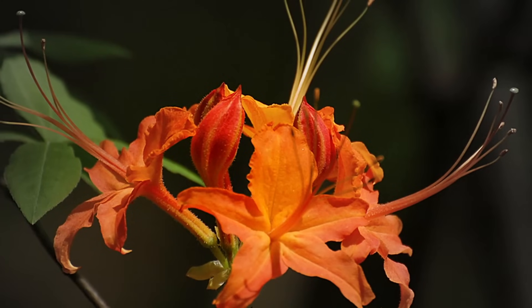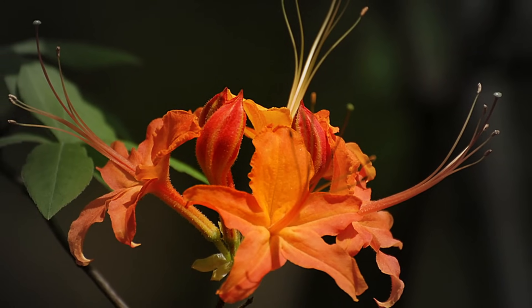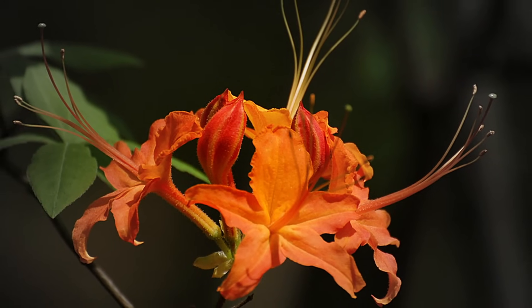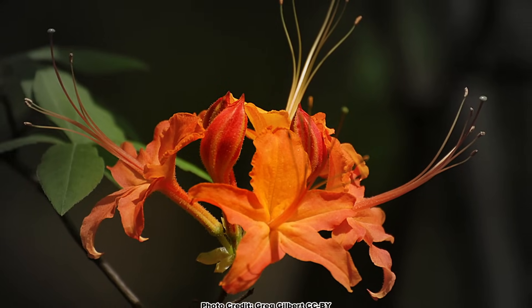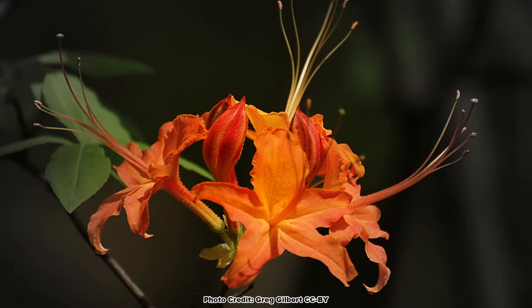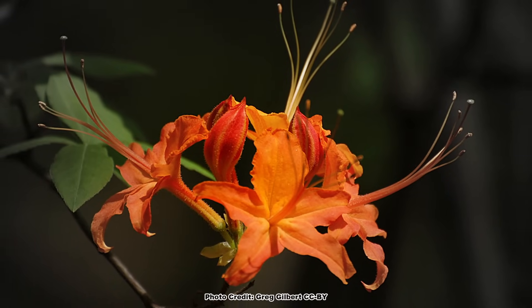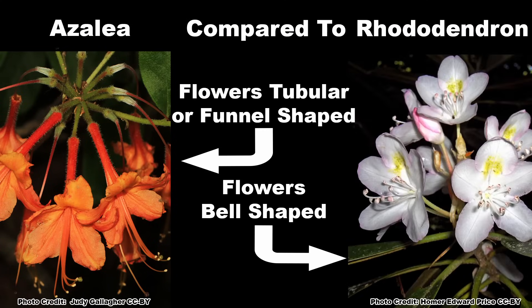By far the most precise way to differentiate the azaleas and the rhododendrons is by examining the flowers, as this is the way these groups were split up taxonomically by botanists. The azaleas have tubular or funnel-shaped flowers, and rhododendrons have bell-shaped flowers.